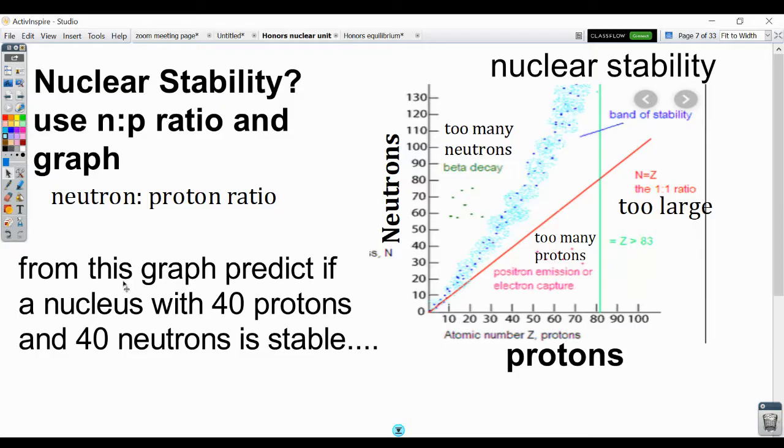If I were to take from this graph and I wanted to predict if I have a nucleus that has 40 protons and 40 neutrons, that would put it about here on my graph. It is not on the band of stability, and so I would predict that that nucleus is not stable. In fact, I was able to say that it looks like that nucleus would undergo positron emission or electron capture in order to move itself towards that band of stability.